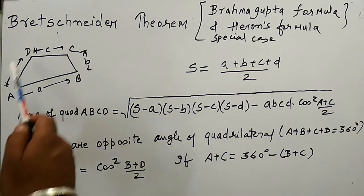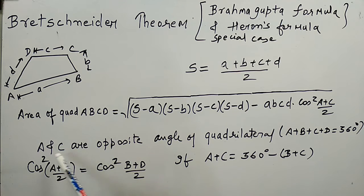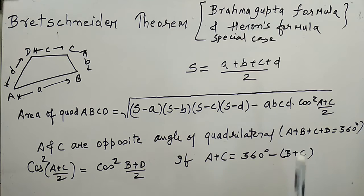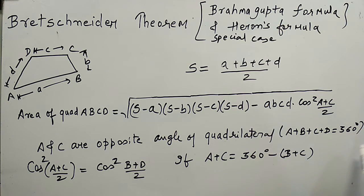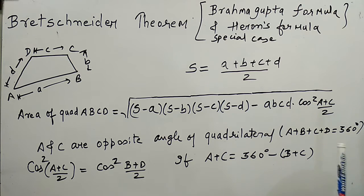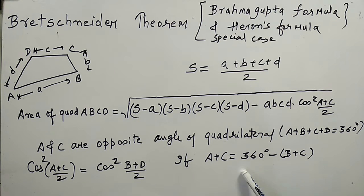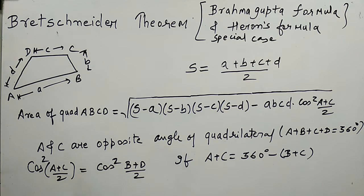In quadrilateral ABCD, A and C are opposite angles. We know the property that the sum of all interior angles of a quadrilateral is 360 degrees. So A plus C equals 360 minus (B plus D), which means cos²((A+C)/2) equals cos²((B+D)/2).